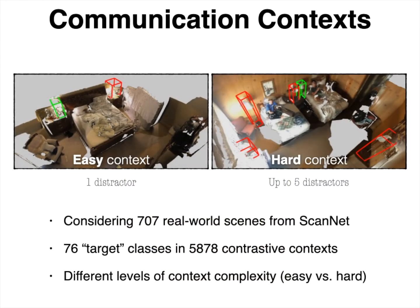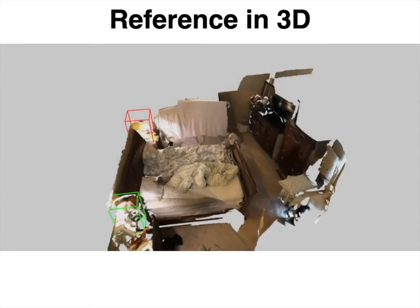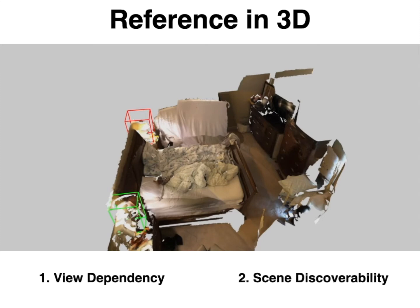To build our visual data, we consider more than 700 scenes from the ScanNet dataset and 76 fine-grained target object classes to create scene-target tuples which return communication contexts. These contexts are of varying complexity with the easiest one containing one intraclass distractor and the hardest one up to five. Considering how to build linguistic references for those visual data, we define the following two properties: view dependency and scene discoverability.